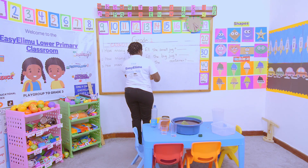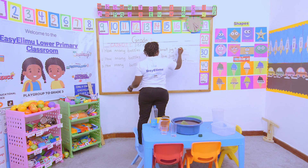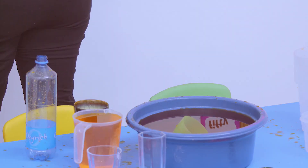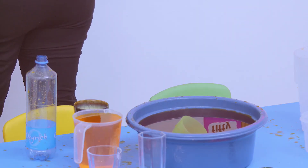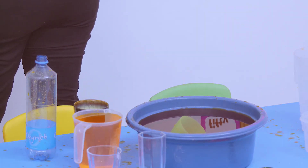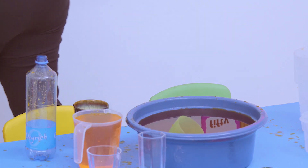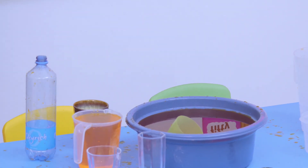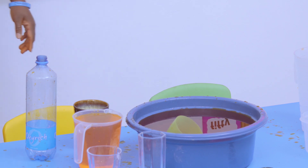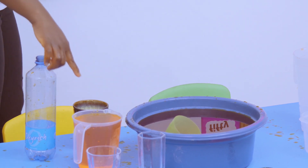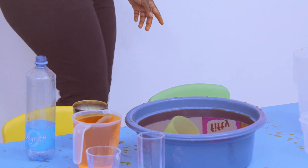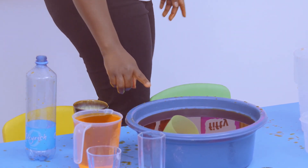So how many bottles fill the small jug? It is only one bottle — one liter bottle — that fills the jug. And so, meaning our jug is one liter.